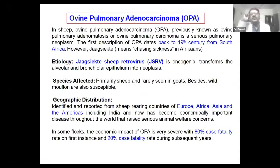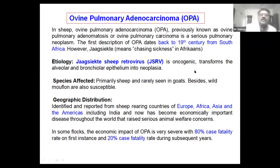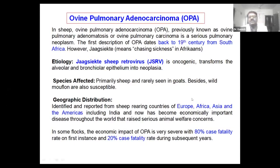Coming to ovine pulmonary adenocarcinoma — previously known as pulmonary adenomatosis or ovine pulmonary carcinoma — it is popularly called 'jaagsiekte,' meaning chasing sickness in Africa. The etiology is jaagsiekte sheep retrovirus (JSRV), and this virus is oncogenic and transforms the alveolar and bronchiolar epithelium into neoplasia. The species affected are primarily sheep, with few cases in goats. It is widely distributed in Europe, Africa, America, and including India.